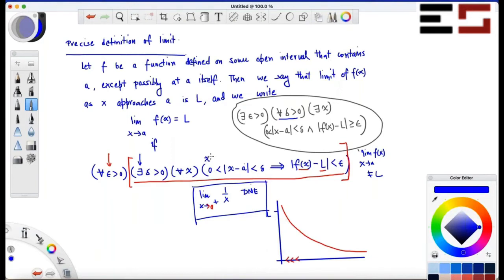So there'll be a condition like this, X greater than a, and this implies this for the right limit. Because I cannot look for points to the left of a, I can only look for points to the right of a.